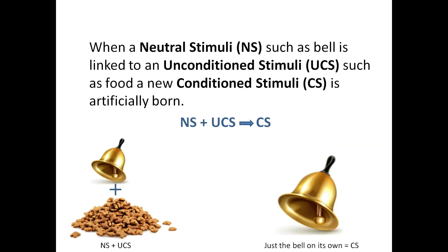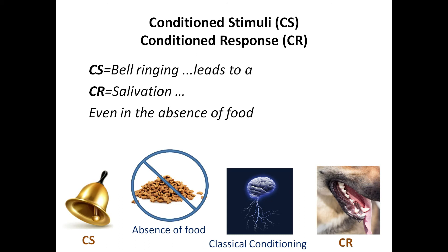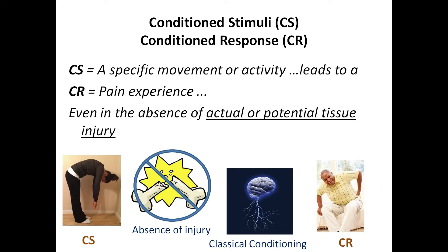When a neutral stimuli, NS, such as a bell, is linked to an unconditioned stimuli, such as food, a new conditioned stimuli is artificially born. So, NS plus UCS results in a CS, which means just a bell on its own. CS is the bell ringing, which leads to a CR, salivation, even in the absence of food. Similarly, CS is a specific movement or activity, which leads to a CR, the pain experience, even in the absence of actual or potential tissue injury.